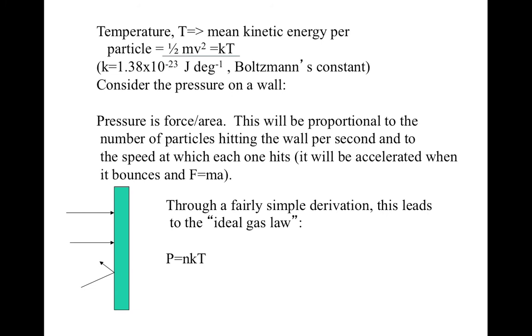Through a fairly simple derivation, this kind of thinking leads to what's known as the ideal gas law, that the pressure is proportional to the number of particles per unit volume times the Boltzmann constant times the temperature. The more particles hit the wall per second, and the faster they hit, the higher the pressure will be.